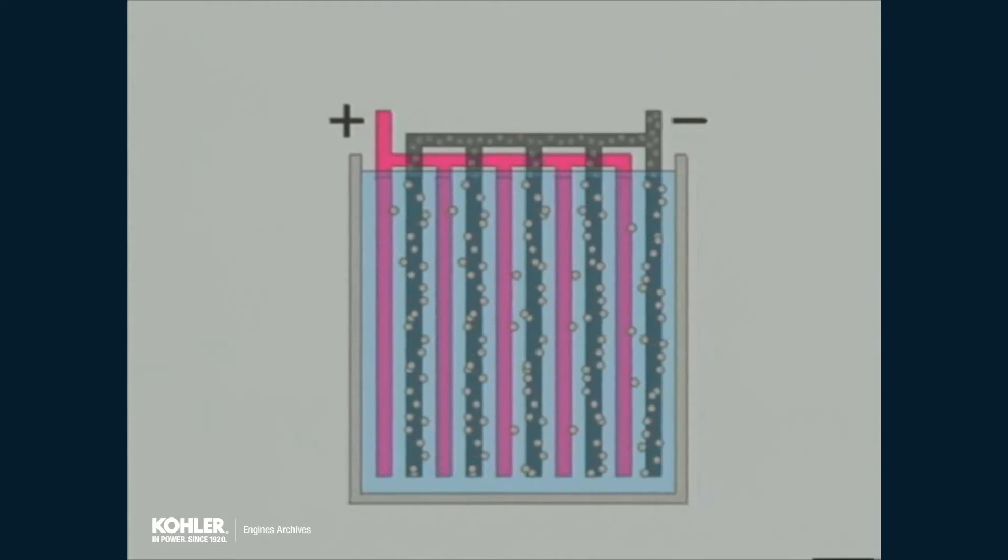The negatively charged electrons collect on the negative plates, giving that terminal a cumulative negative charge or potential, thus the name negative terminal. As the electrons migrate away, the other terminal develops a positive charge or potential and derives its name, positive terminal.